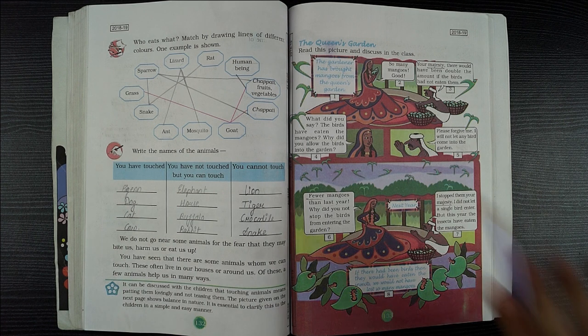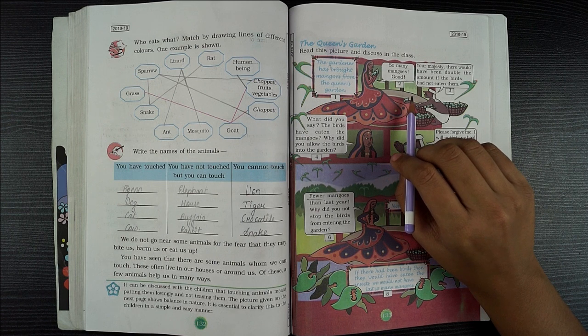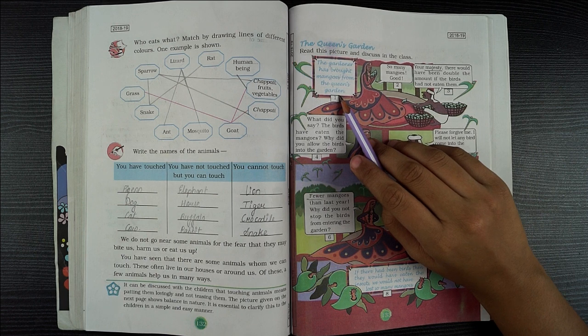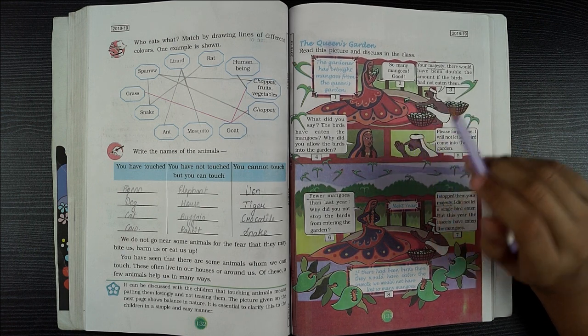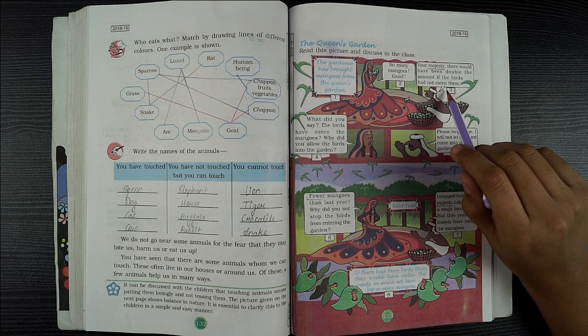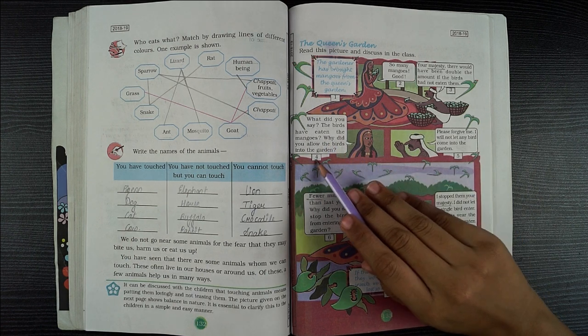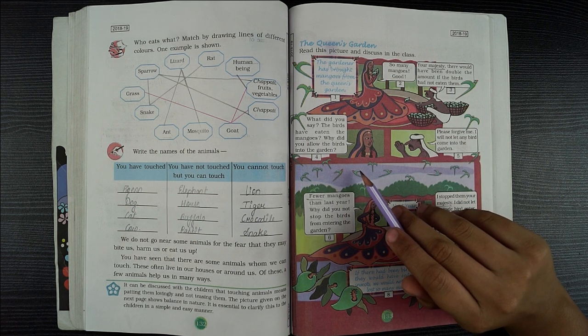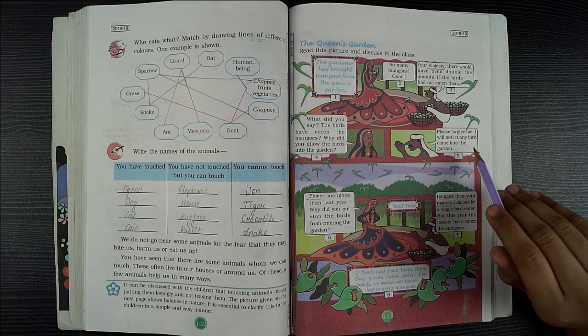Read the queen's garden story. The gardener has brought mangoes from the queen's garden. The queen says so many mangoes, good. The gardener says there would have been double the amount if the birds had not eaten them. The queen asks why did you allow the birds into the garden? He says please forgive me, I will not let any bird come into the garden.